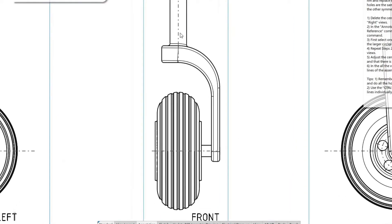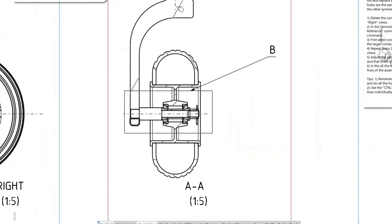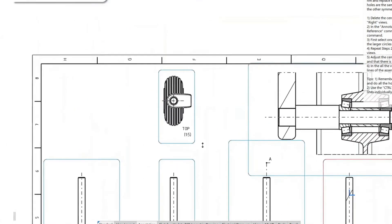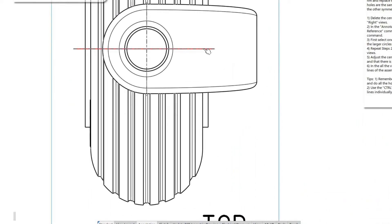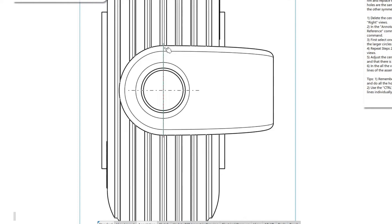Now to make the view more consistent, we will extend the center lines along the symmetry planes of the assembly in all the views where it is necessary. In the top view, delete the extra axis lines that were created and then adjust its center lines.